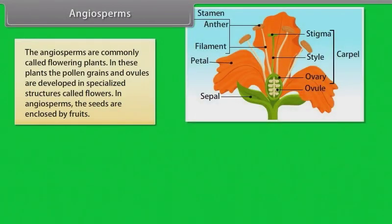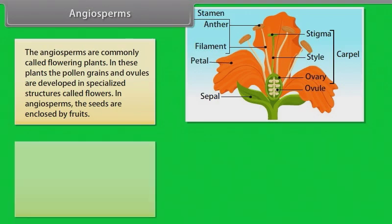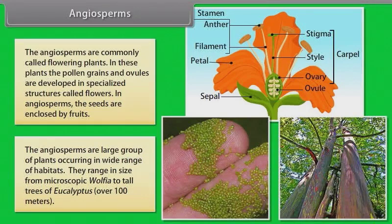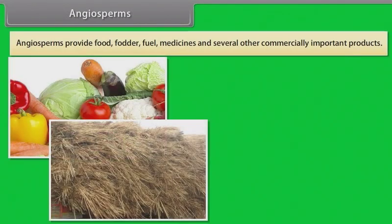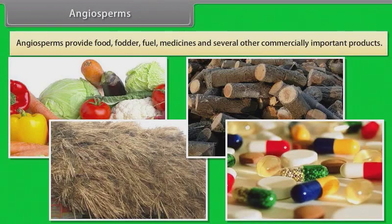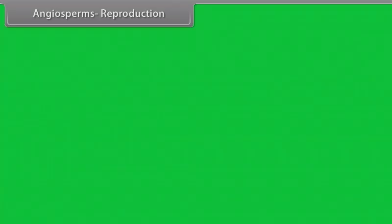The Angiosperms are commonly called flowering plants. In these plants the pollen grains and ovules are developed in specialized structures called flowers. In angiosperms the seeds are enclosed by fruits. The angiosperms are large group of plants occurring in wide range of habitats. They range in size from microscopic Wolffia to tall trees of Eucalyptus over 100 meters. Angiosperms provide food, fodder, fuel, medicines and several other commercially important products.